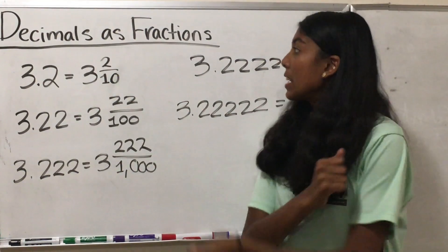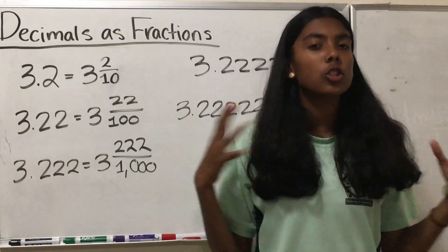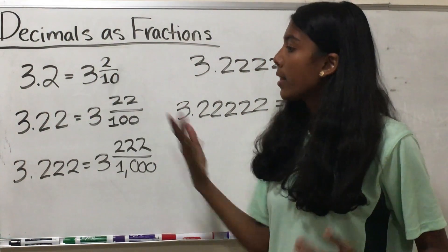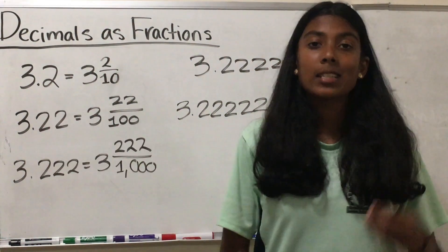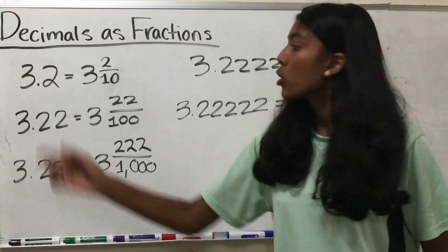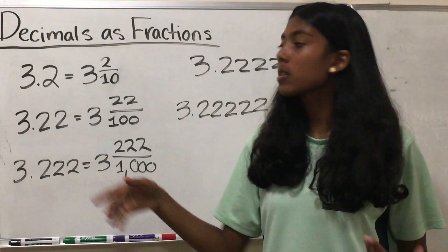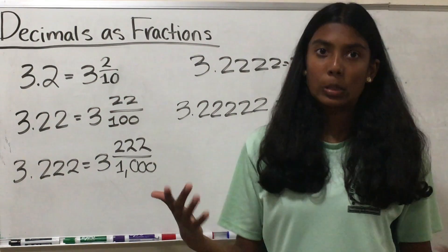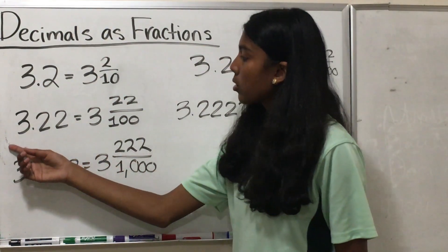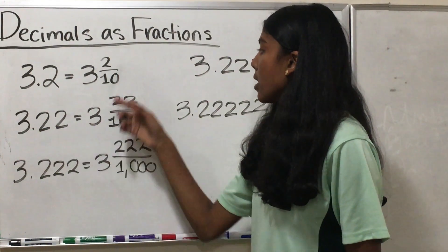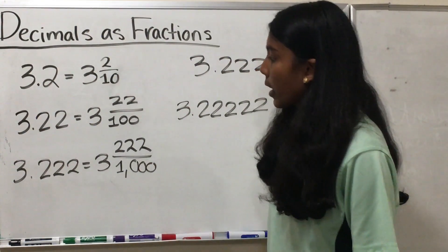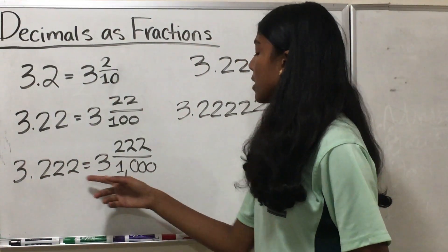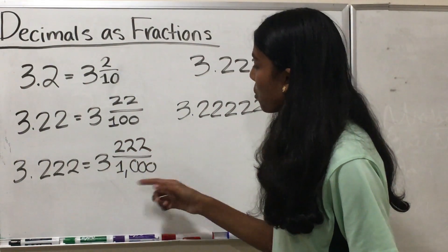Our next topic of today is decimals as fractions. To do this, let's do some examples. We start off with 3.2. We can rewrite this as 3 and 2 tenths, because 2 is in the tenths place, meaning there are 2 tenths. Similarly, 3.22 can be rewritten as 3 and 22 over 100. And 3.222 is equal to 3 and 222 over 1000.